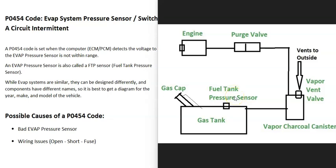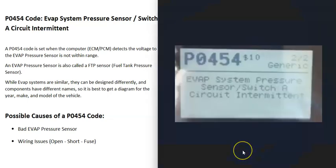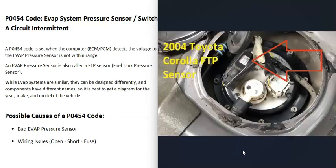When you get a P0454 code, the computer is seeing some kind of problem with that pressure sensor, so it has to be troubleshot. The most common cause of this code is either that the EVAP pressure sensor has gone bad and needs to be replaced, or there's some kind of problem inside the wiring.